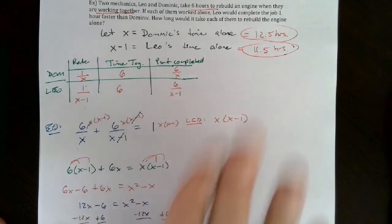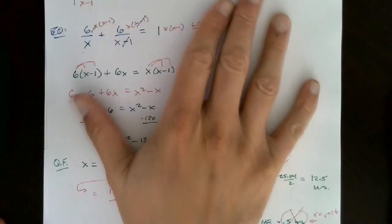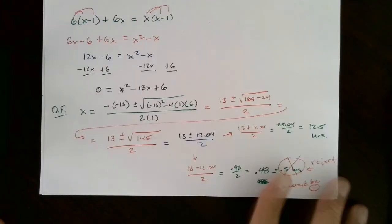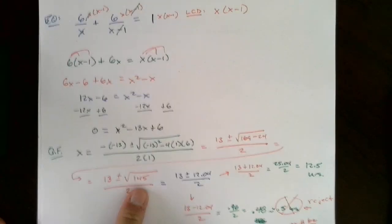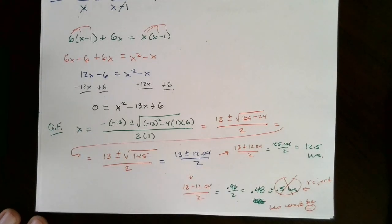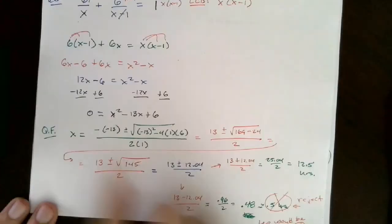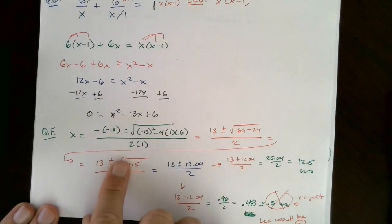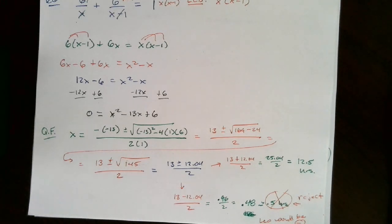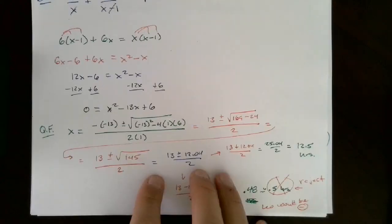Again, everything at the beginning - two people working together on a task - we covered in previous sections. The only new part was using the quadratic formula to solve, and then deciding which answer to reject when both are positive. For application problems, I simplify the square root to a decimal. If it's not an application problem, simplify using our rules for radicals. That's it for the word problems in this section; the last video will cover solving for a variable.